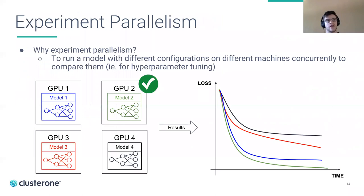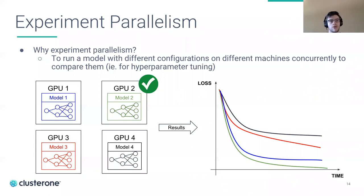Experiment parallelism is the basic idea of running several versions of the same model or different models. A good use case is hyperparameter tuning: you have a large parameter space and you want to cover it faster, using a few GPUs or the scalability of the cloud to run several experiments concurrently. The key is being able to track those jobs and compare them.